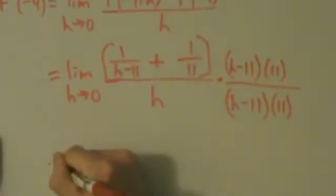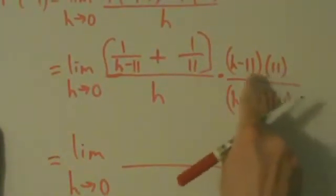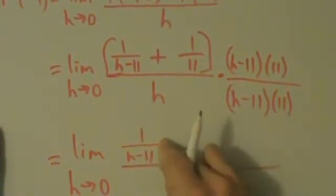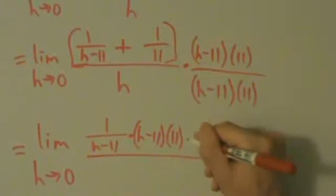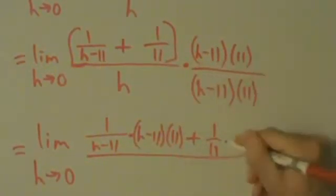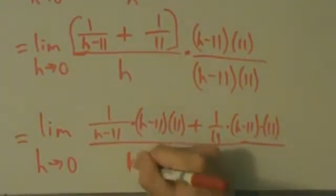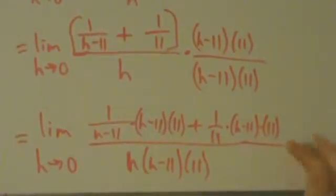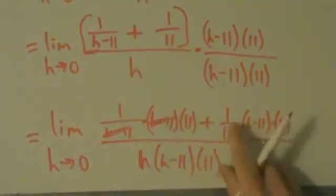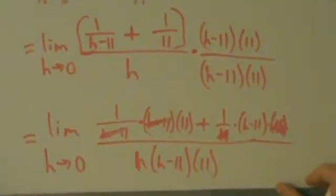When we distribute this through on the top, it's going to cancel out the denominators. In the first term, 1 over h minus 11 times h minus 11 times 11 — the h minus 11 cancels. In the second term, 1 over 11 times 11 cancels. So we don't have a complex fraction anymore. The bottom still has h times h minus 11 times 11.